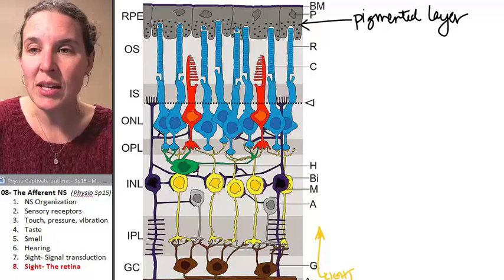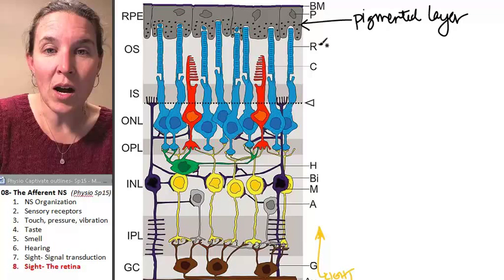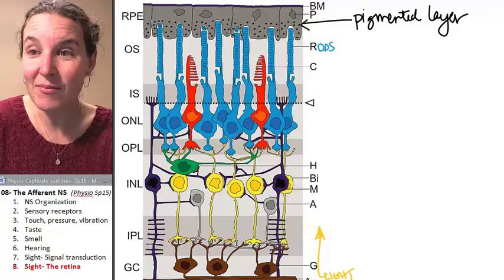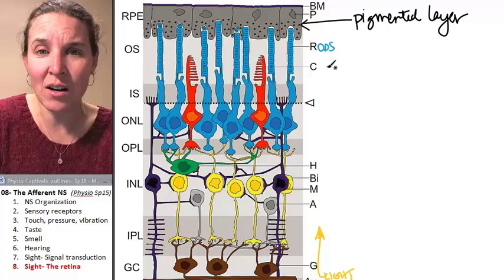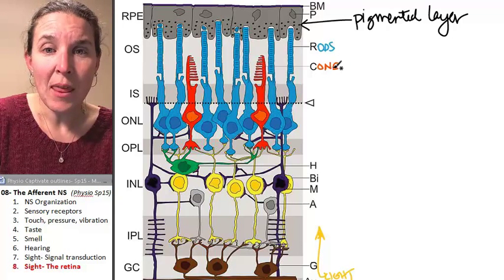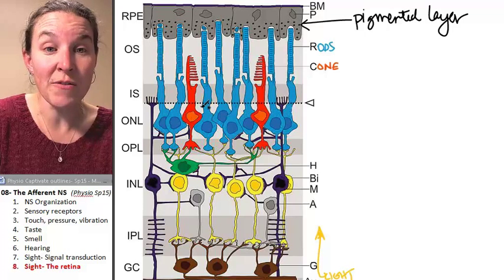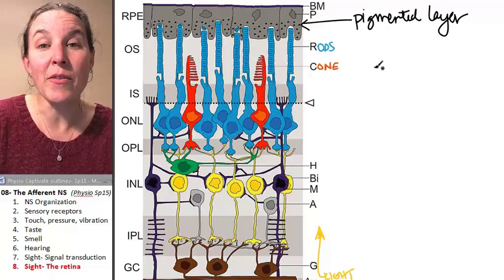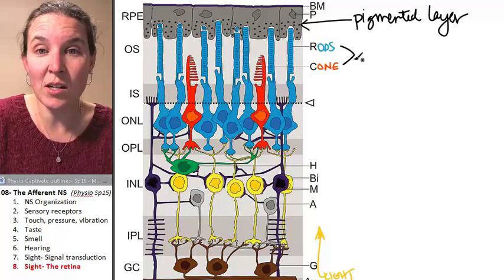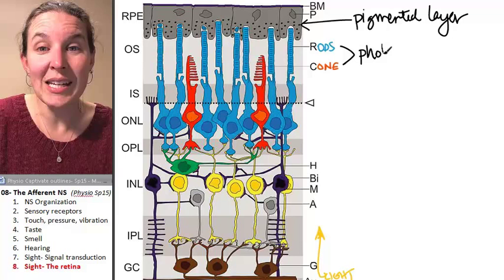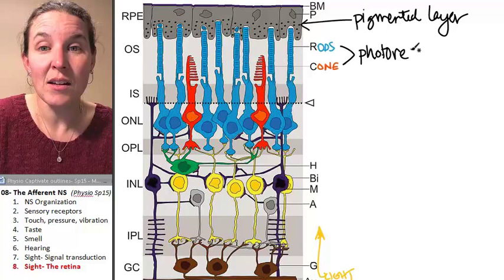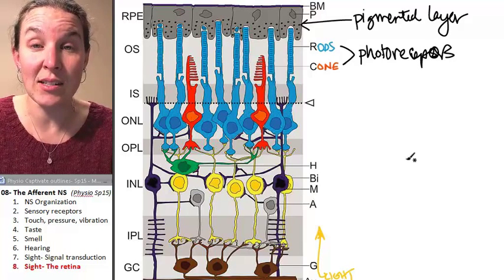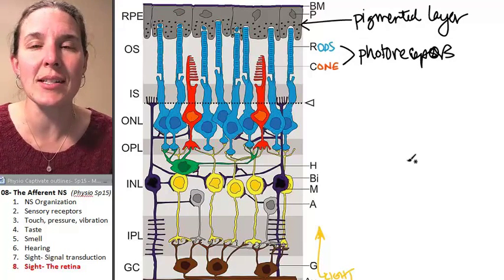Then you've got your rods and your cones, and you can see here that my rods are the blue guys, and my cones are orange. Do you agree that the rods and the cones are actually found in the same layer? And these are my photoreceptors, and we've already talked about how they function. So we need light to reach receptors. We need the light to reach these guys first.